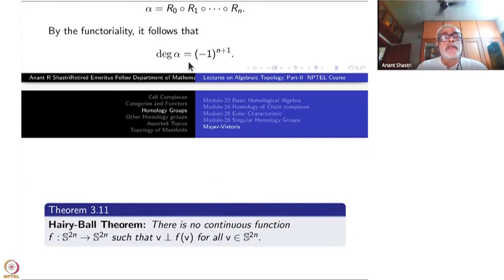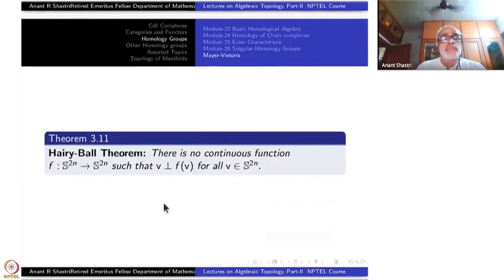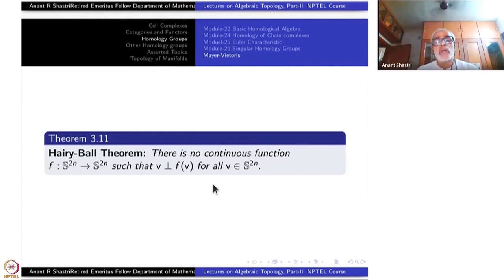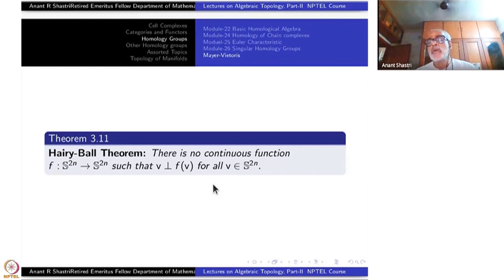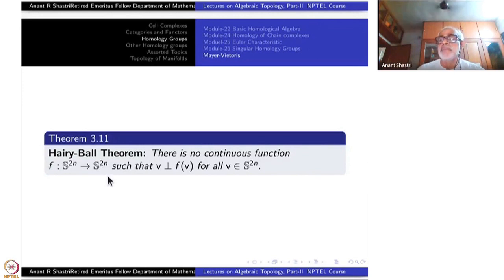Once you know the degree of the antipodal map, you have the theorem called the Hairy Ball theorem in differential topology. It states: there is no continuous function F from S^N to S^N such that F(V) is perpendicular to V at every point V. Such a function is called a non-vanishing unit vector field, since F(V) is required to be a unit vector. So there is no continuous unit vector field on an even-dimensional sphere.